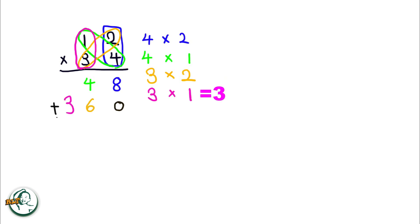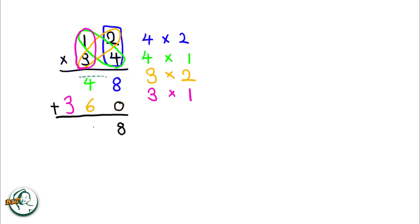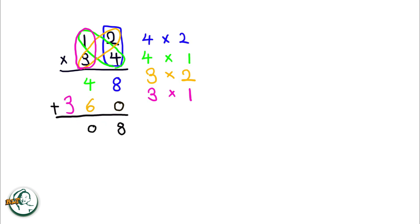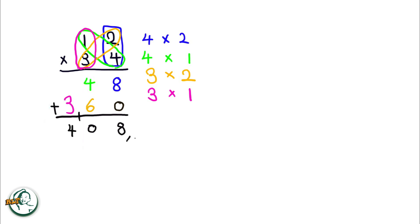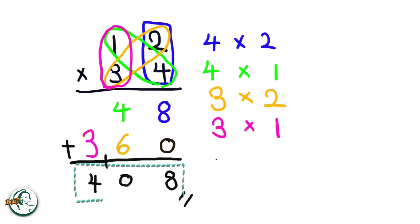Now we add these two sets of products. Adding 8 and 0 gives us 8, and 4 plus 6 is 10. We write down the 0 and carry over the 1. Adding the carried over 1 to 3, we get 4. Therefore, the product of 12 and 34 is 408.